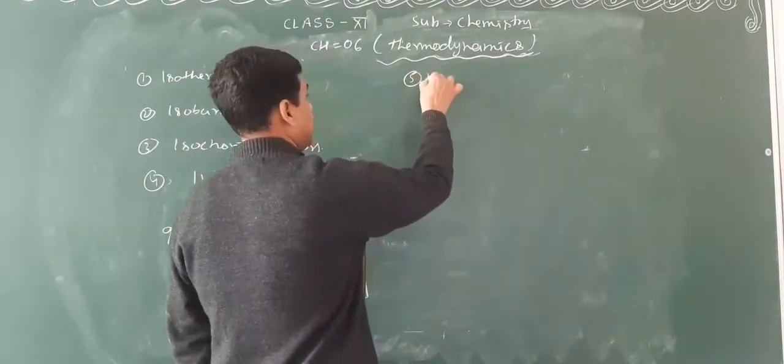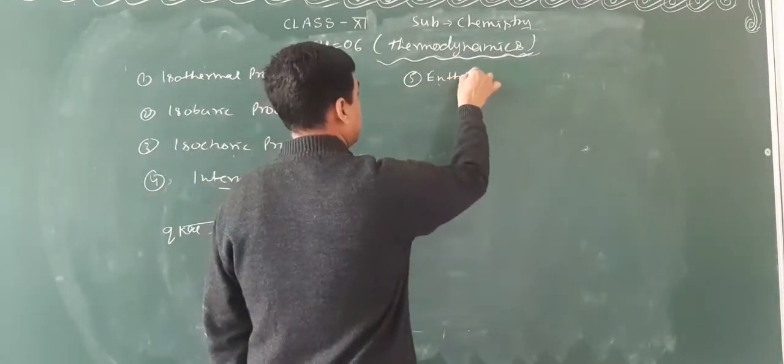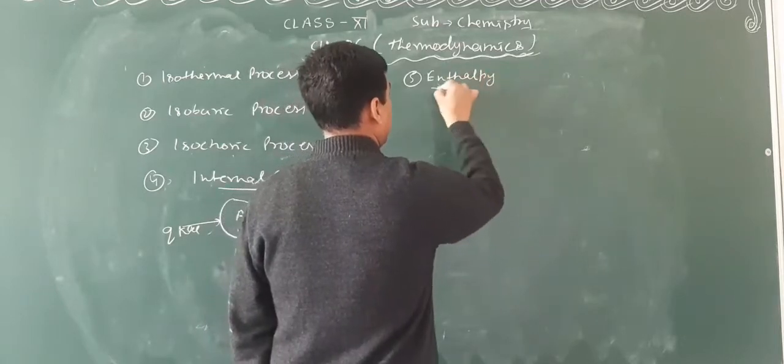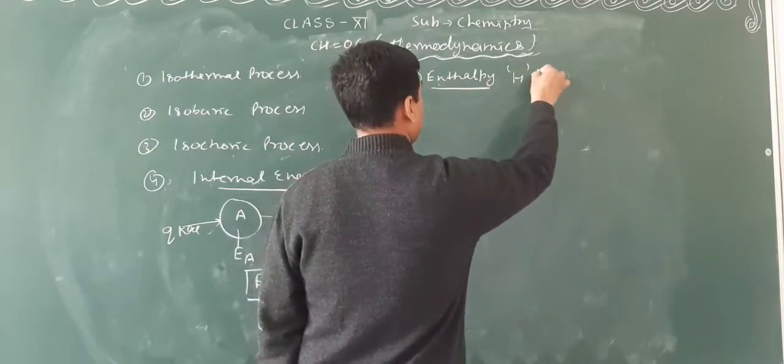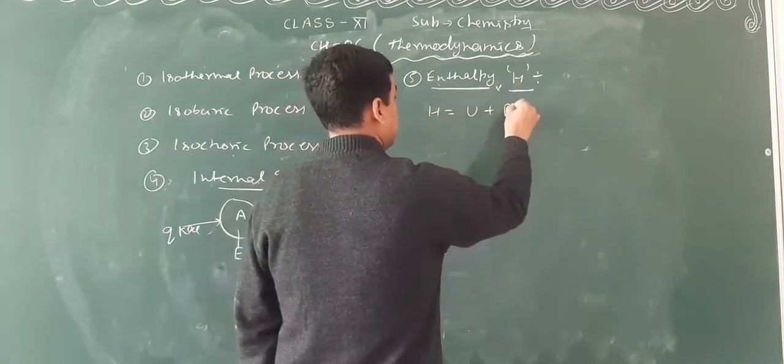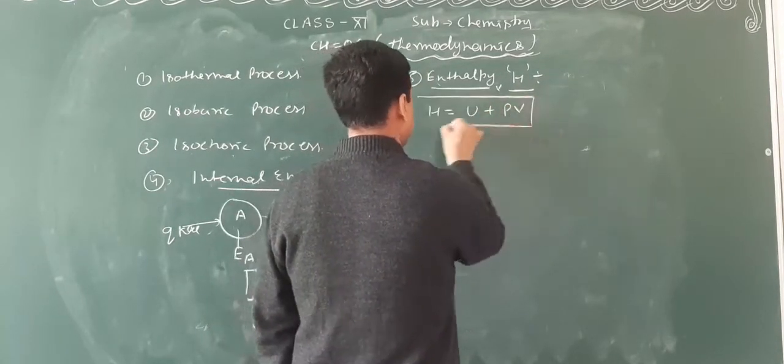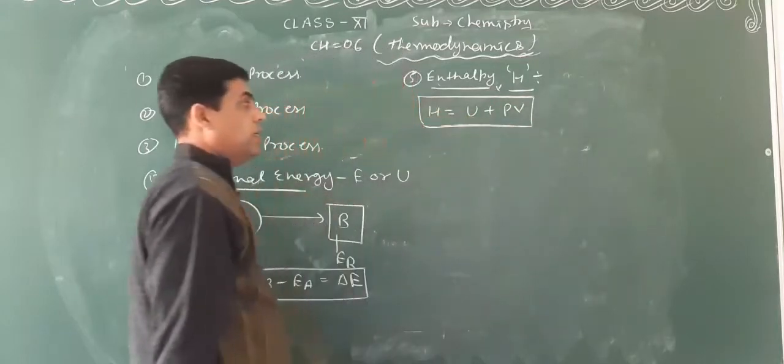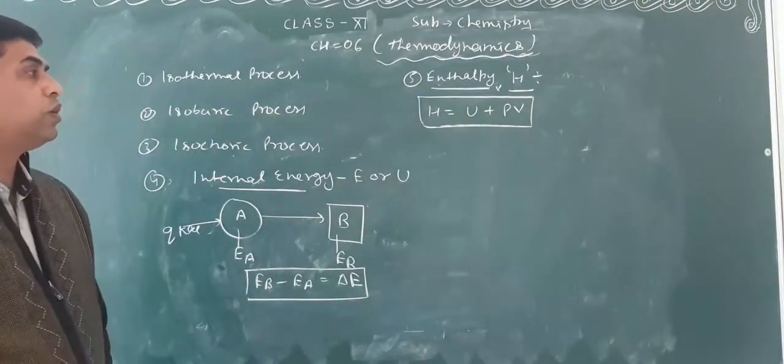The most important thing is enthalpy. Enthalpy is denoted by H, and this is the mathematical formula: H is equal to U plus PV, or E plus PV. E is internal energy or U. P is pressure and V is volume.